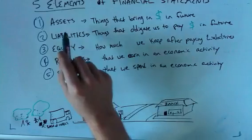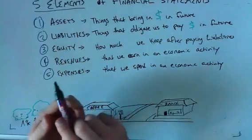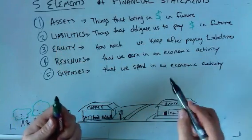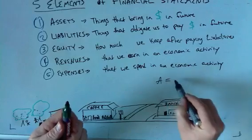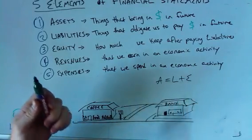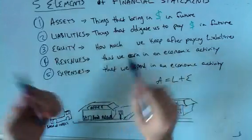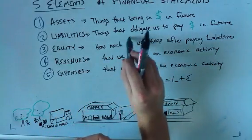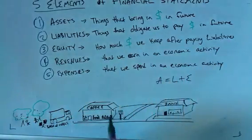Now, assets, as we learned in a previous video, assets, which we'll call A, are equal to liabilities L plus equity. So basically, the equity is how much of the value of the firm that we keep after our liabilities.